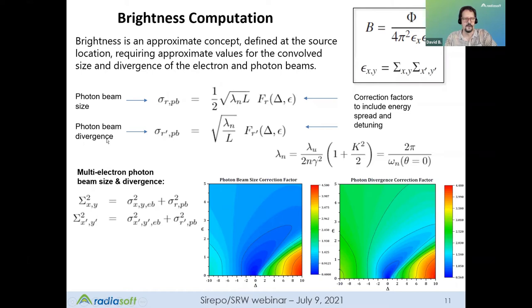Brightness is an approximate concept, and it's defined at the source location. It requires approximate values for the convolved size and divergence of the electron and photon beams. So the formulas here in the upper right: brightness is the photon flux divided by four pi squared times these two generalized emittances, the horizontal and the vertical generalized emittance. And then these are written as the product of these capital sigmas, which are defined below. So basically, you need to know the photon beam size, which is written here in the left side of this first equation. And that has a standard form related to the square root of the wavelength of the harmonic that you're interested in, and then times another version of these precalculated universal functions. And then for the photon beam divergence, it's the same story.